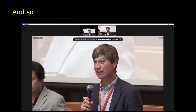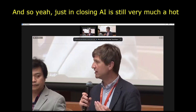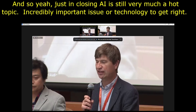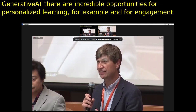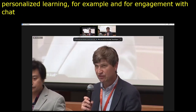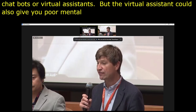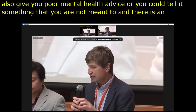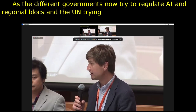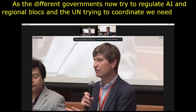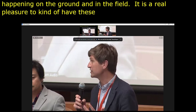AI is still very much a hot topic. It's an incredibly important technology to get right, and it is increasingly in the lives of children, with generative AI. There are incredible opportunities for personalized learning and engagement with chatbots or virtual assistants. But there are also risks — that virtual assistant that helps you with your homework could also give you poor mental health advice, or there could be an infringement on your privacy and data. As governments try to regulate AI, we need to prioritize children, there's a window of opportunity, and we need to learn from what's happening on the ground. It's a real pleasure to have these experiences shared here as bottom-up inputs into this important process.